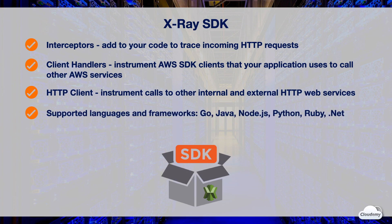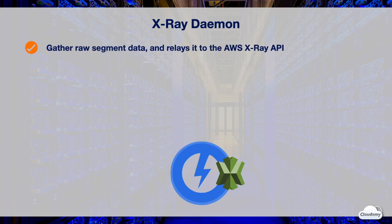The X-Ray SDK supports the following programming languages and frameworks: Java, Node.js, Python, Ruby, .NET, and Go. The X-Ray daemon is a background application that listens for traffic on UDP port 2000. The daemon program gathers raw segment data and relays it to the AWS X-Ray API.